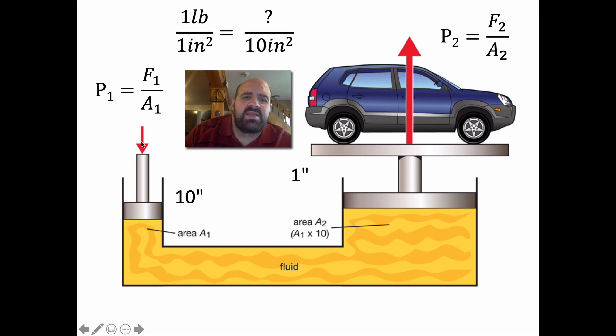Let's say that you were just pushing down here with a force of 1 pound. And let's say this area was just 1 inch squared. Let's just make it 1 and 1. What is your pressure? Well, 1 pound over 1 inch squared is 1 over 1. It's 1 psi, 1 pound per square inch. You have a pressure of 1.